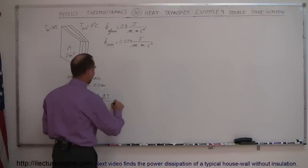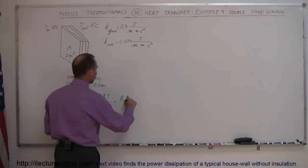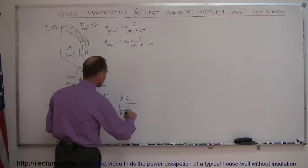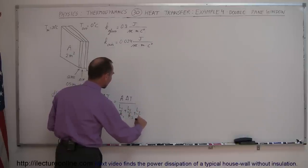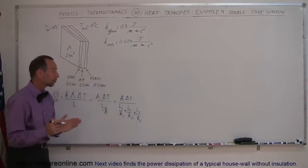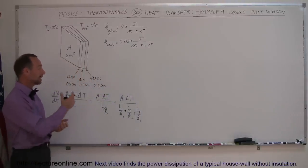Since there are three layers, we need the L divided by k for all three layers. So really what this becomes is A times delta T, divided by L1 over k1, plus L2 over k2, plus L3 over k3. However many layers there are, you need to have an L over k factor for each layer.